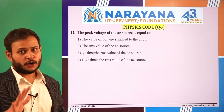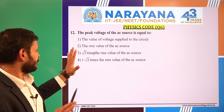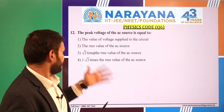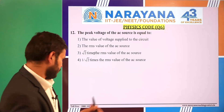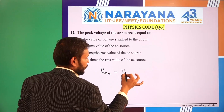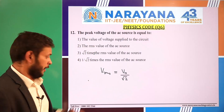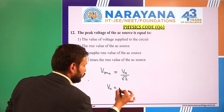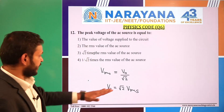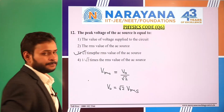Moving to question number 12. Lots of questions are coming every year from AC, and here is a fairly easy one. The peak voltage of an AC source is equal to — and we have to connect this with the RMS value. We know that V_RMS = V₀ / √2, so V₀ = √2 × V_RMS. Peak voltage is √2 times the RMS value of the AC source, and option 3 is correct.